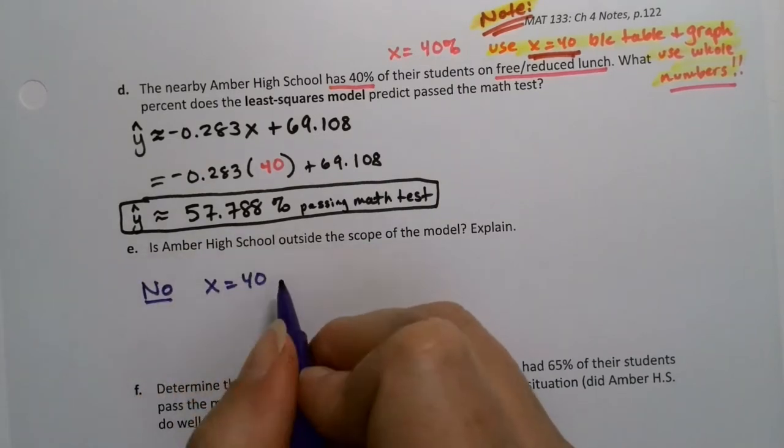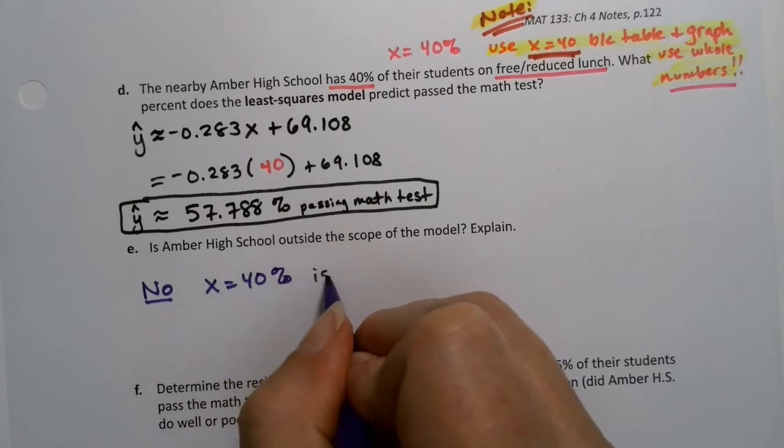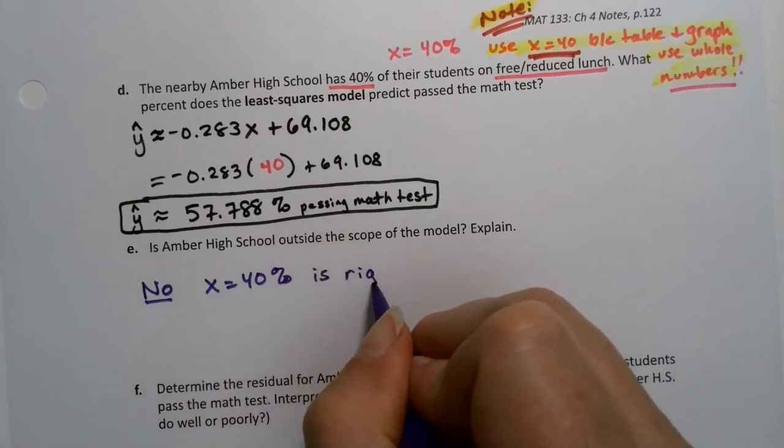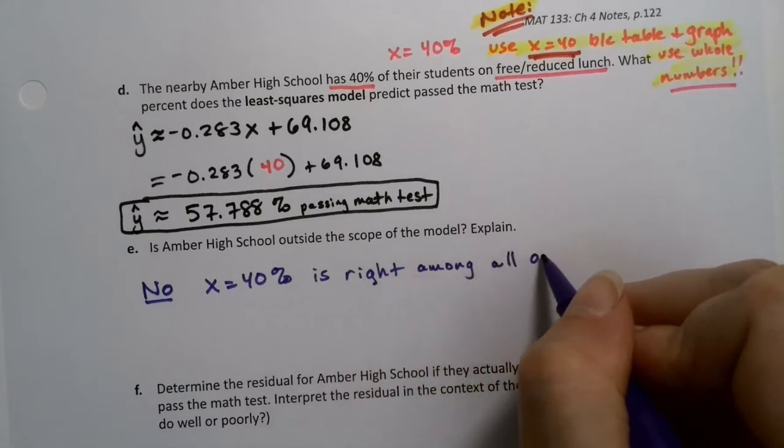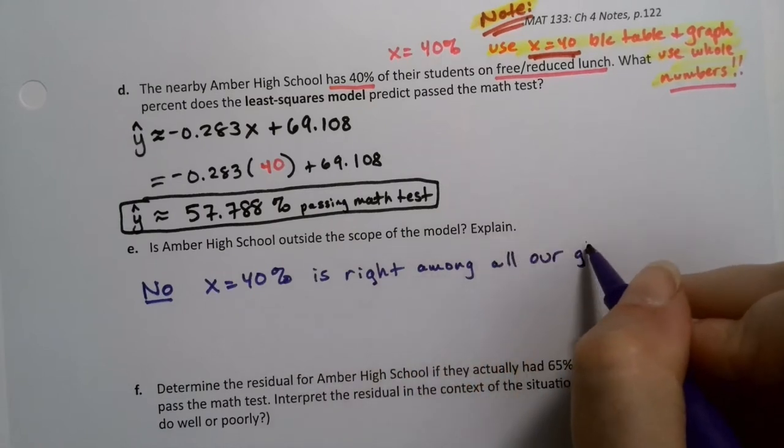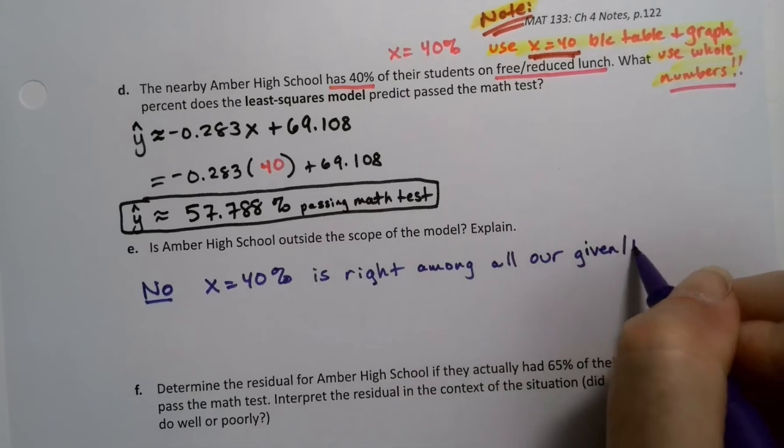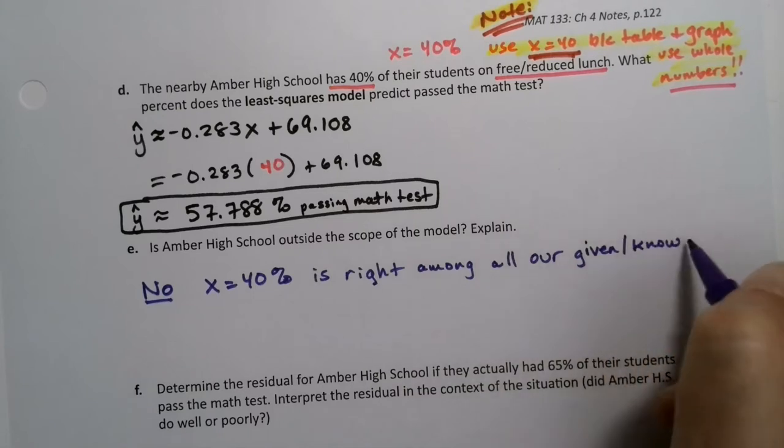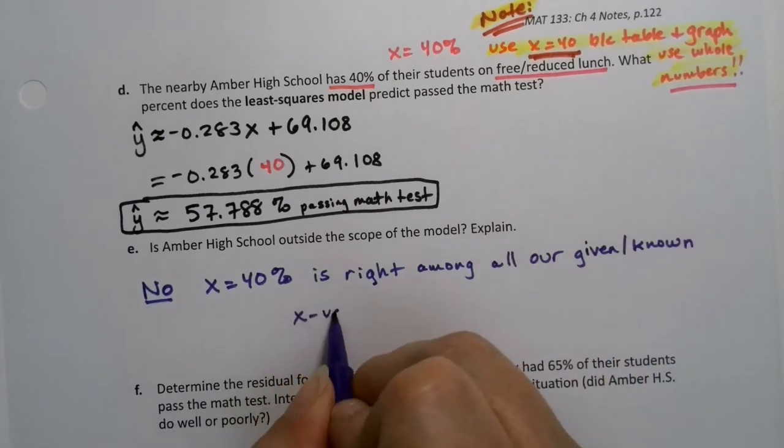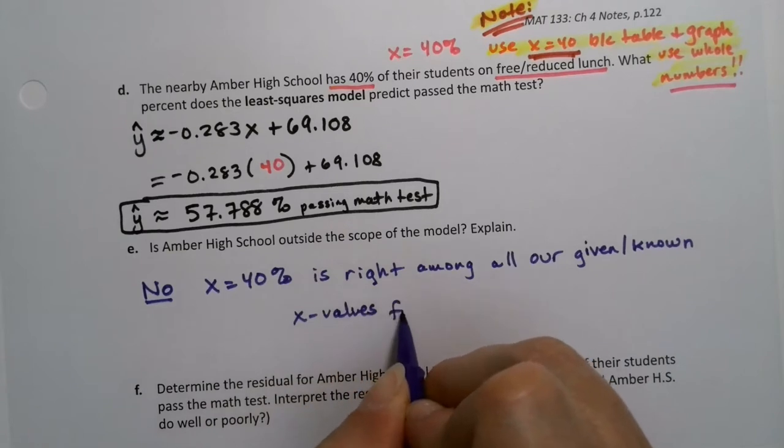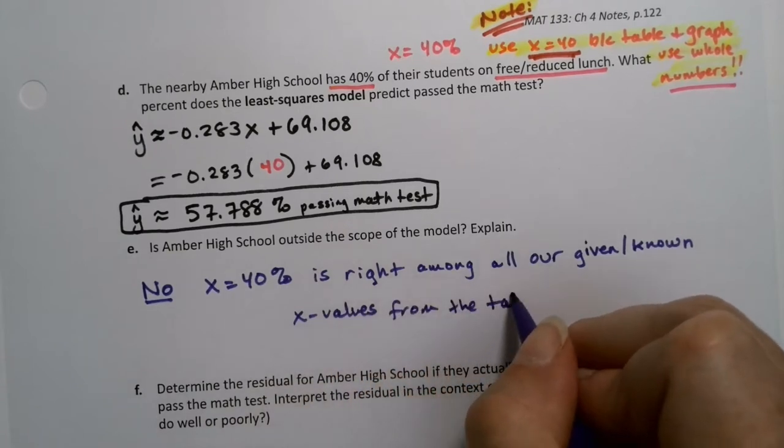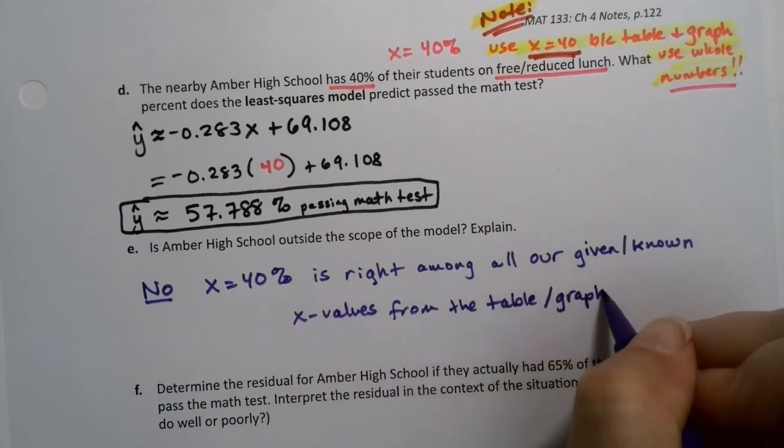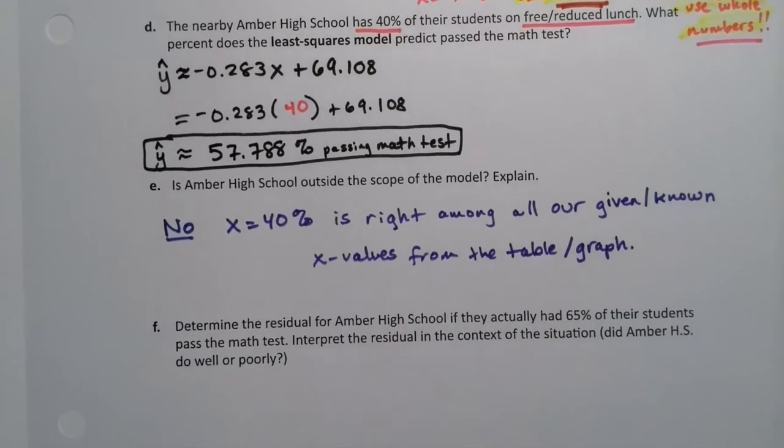40% is right among all our given x values. From both the table and the graph, you can see it. So we have no problems with making that prediction.